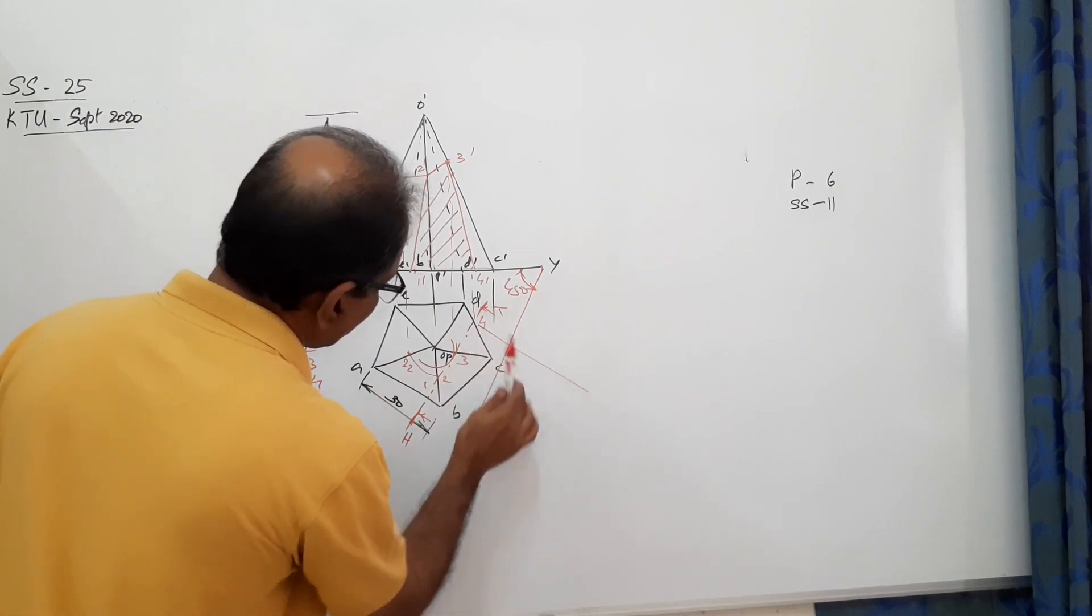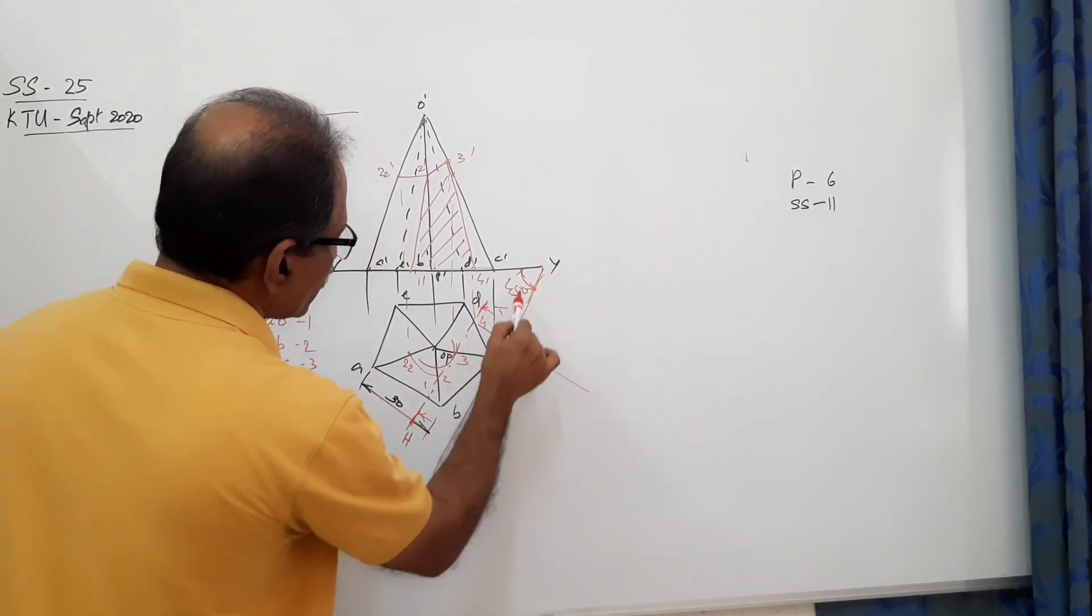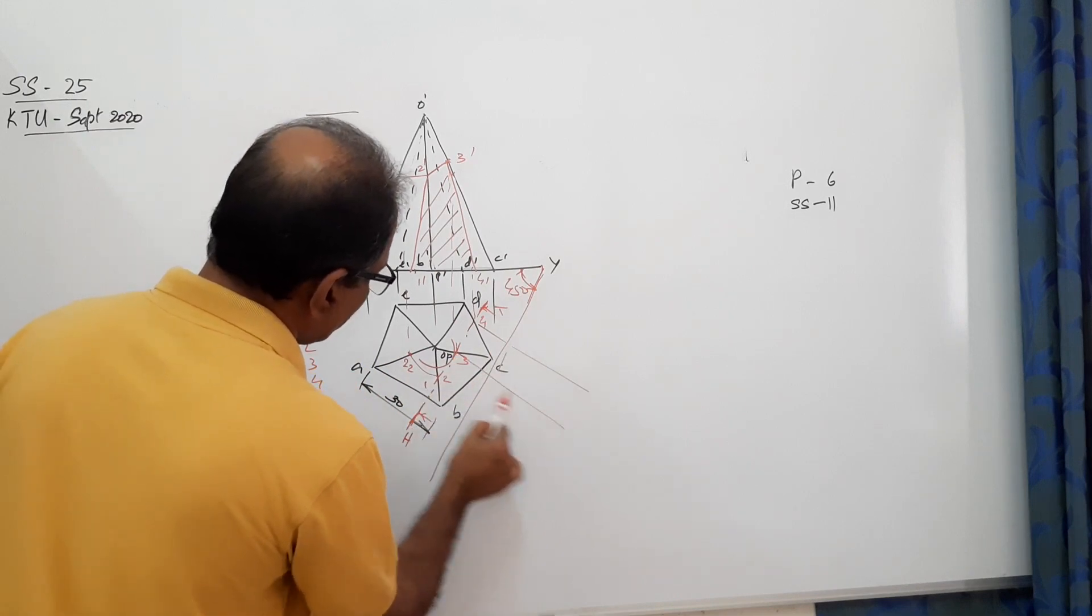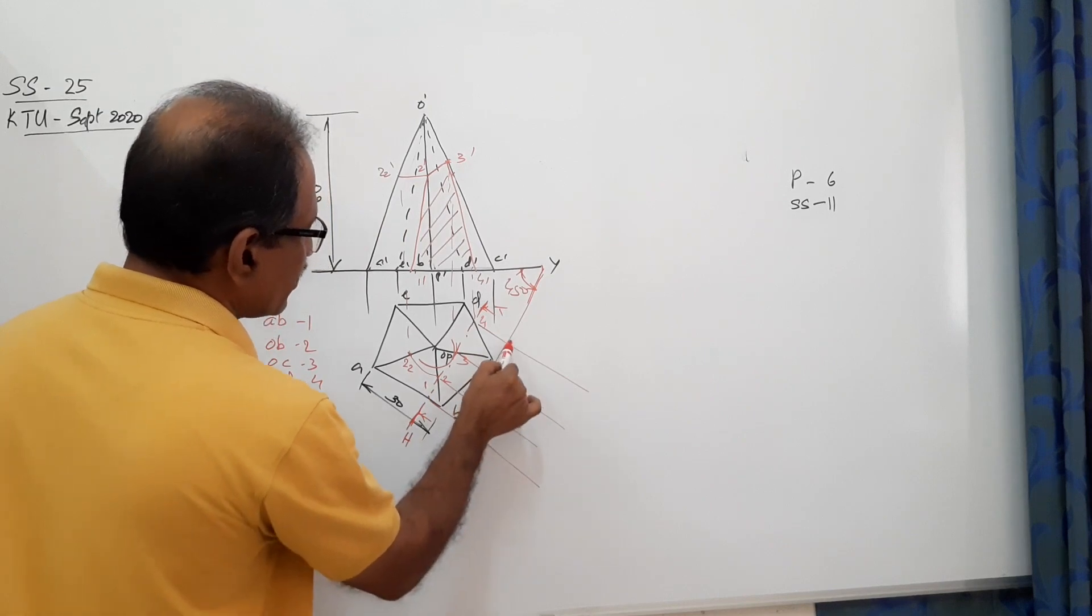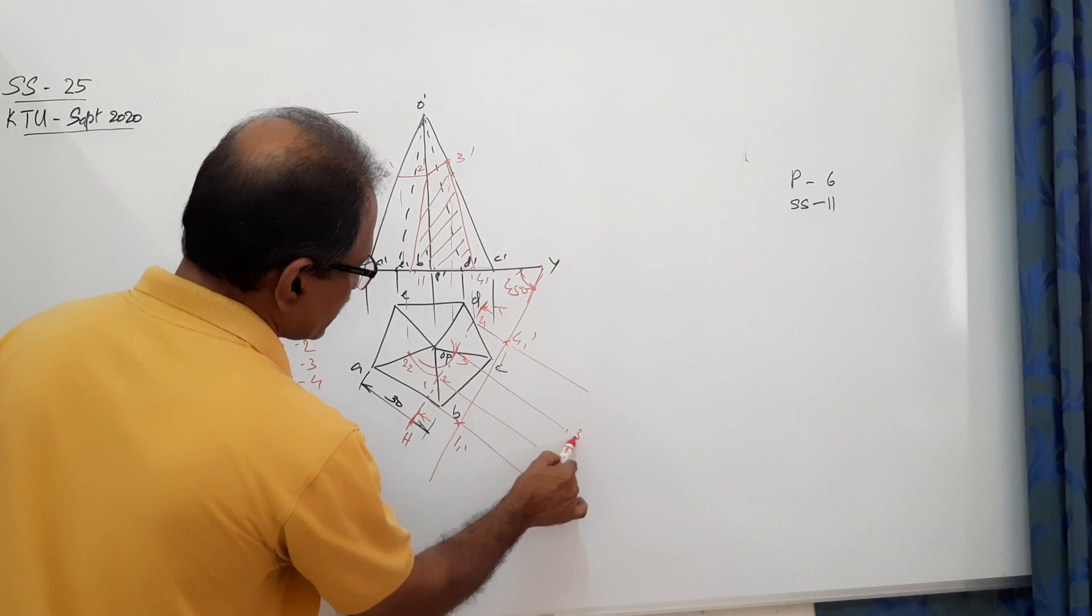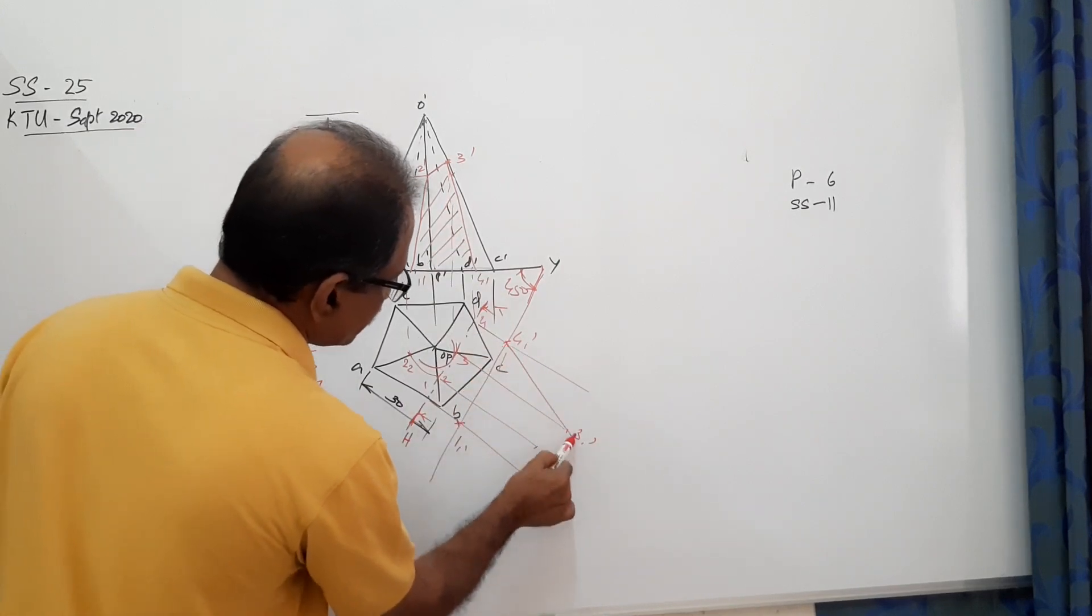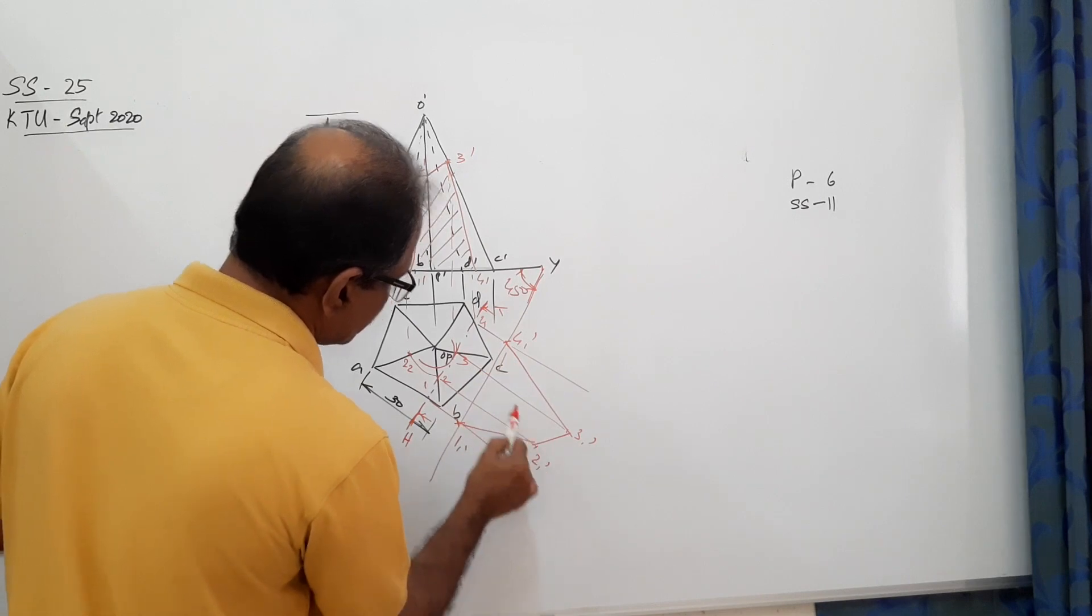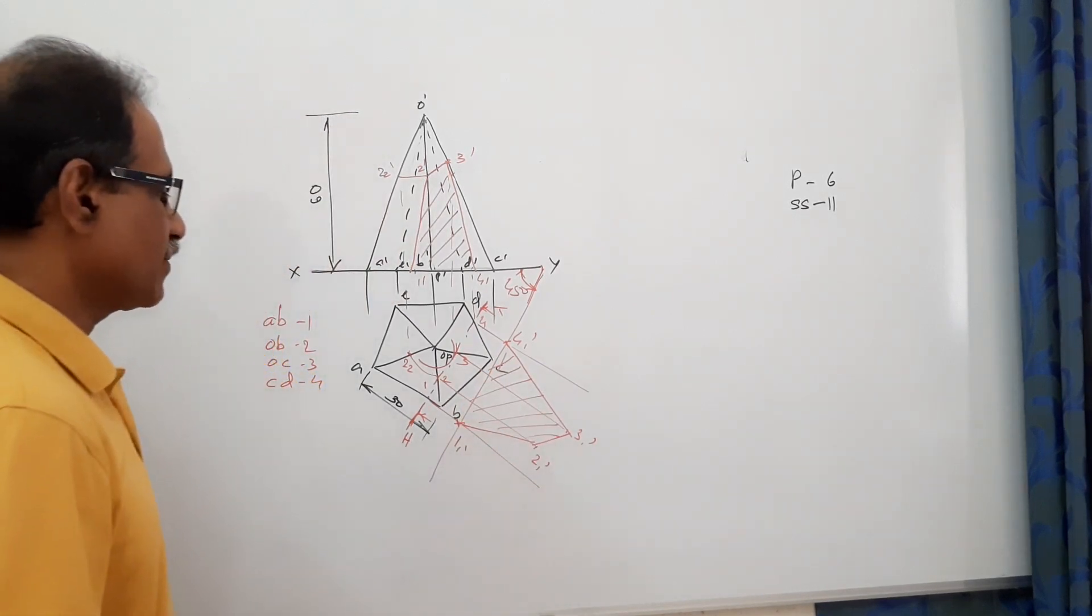You know the procedure of drawing true shape. 1 dash is 0 distance of 1, 1 dash. 4 dash is 0 distance of 4, 1 dash. 3 dash is this distance, this is 3-1 dash. 2 dash is a little bit dash, 2-1 dash. Connect them. Hatch at 45 degrees to X-1 by 1. This is true shape.